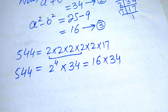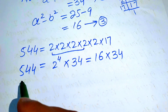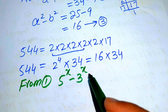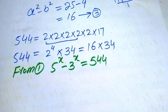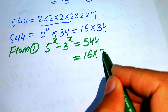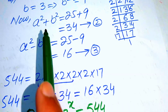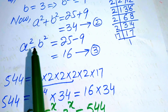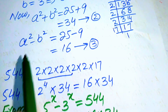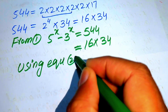We replace 544 in the original equation. From equation number 1 we have 5 to the power of x minus 3 to the power of x equals 544, and we replace 544 by 16 times 34. Using equation number 2, a squared plus b squared equals 34, and equation number 3, a squared minus b squared equals 16, we substitute those values in.